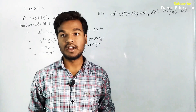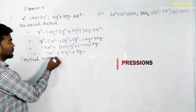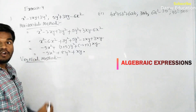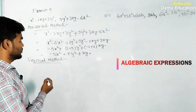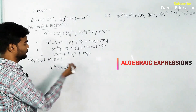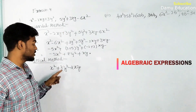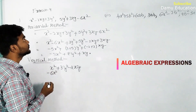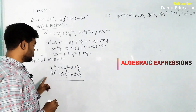Now we check with the vertical method to confirm the answer is the same. In the vertical method, we write the expressions so that like terms are aligned in columns. Write the first expression: x² plus 3y² minus 2xy. Below it, align the second expression so that x² terms are below x² terms, y² below y², and xy below xy.